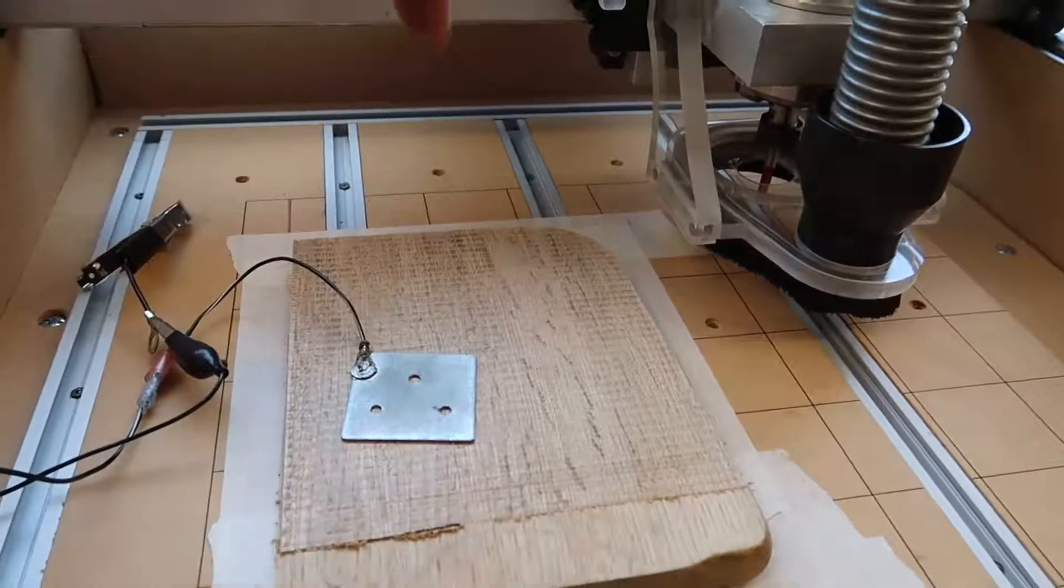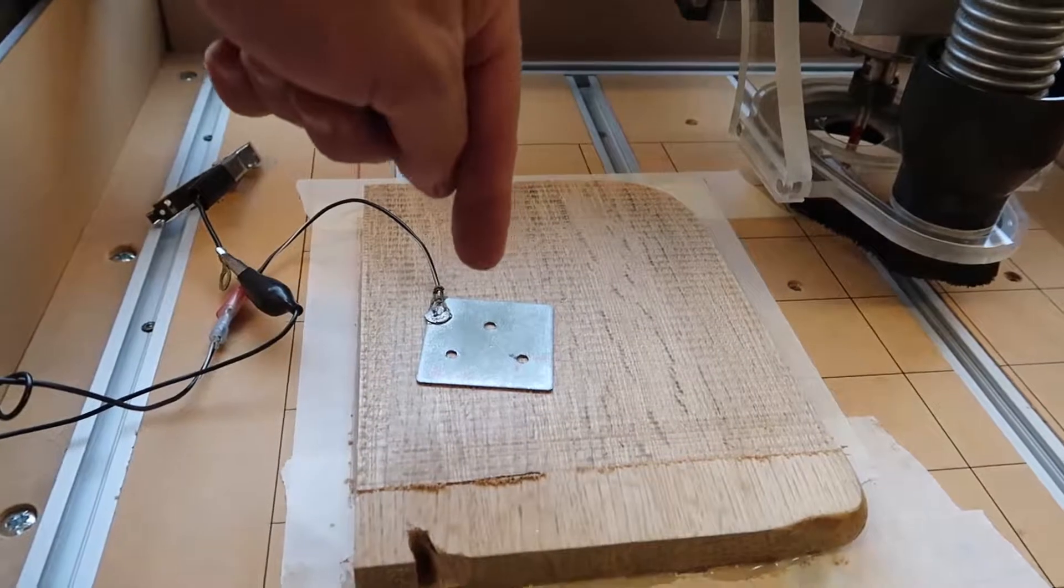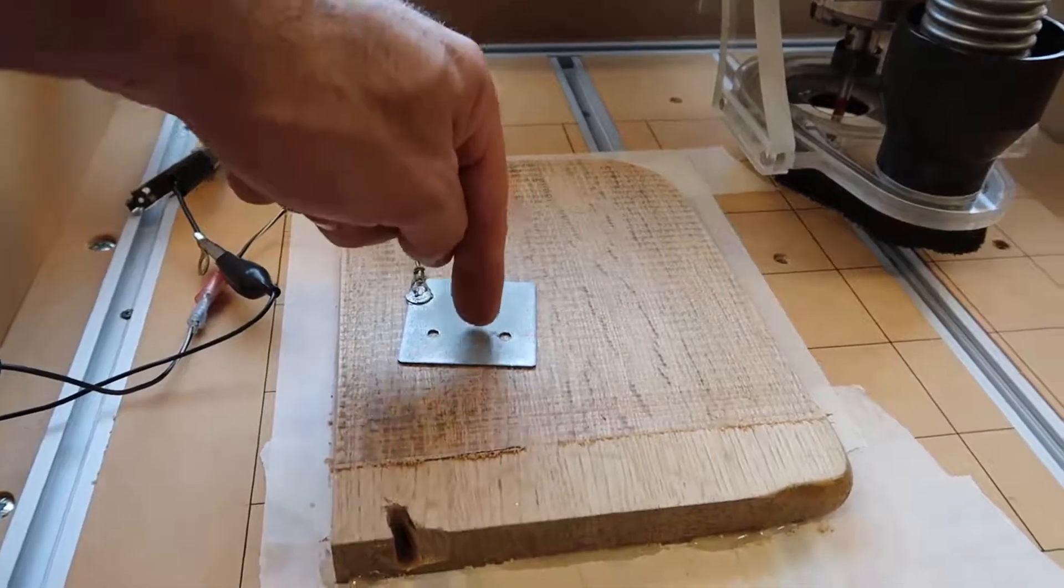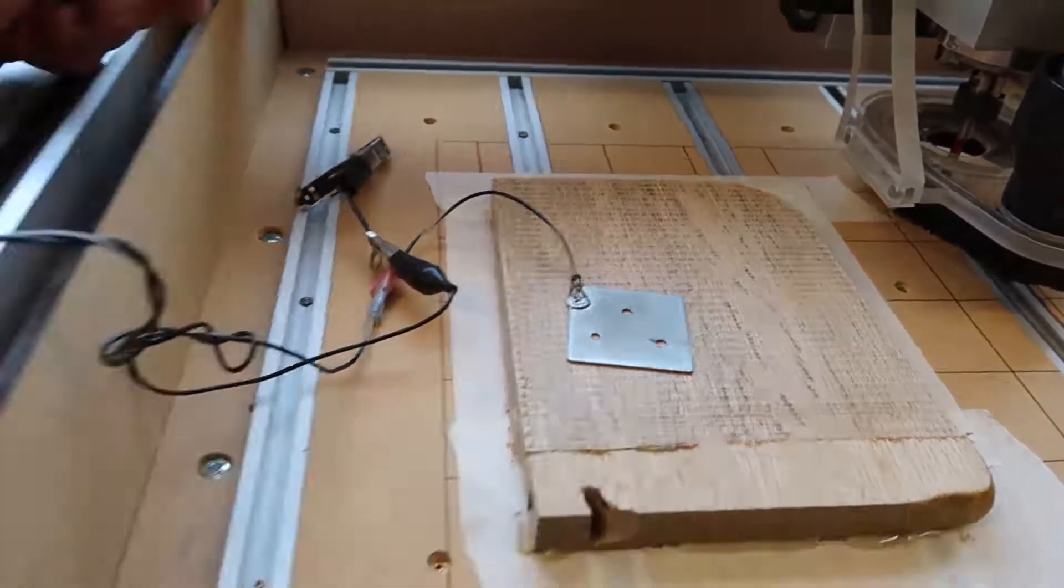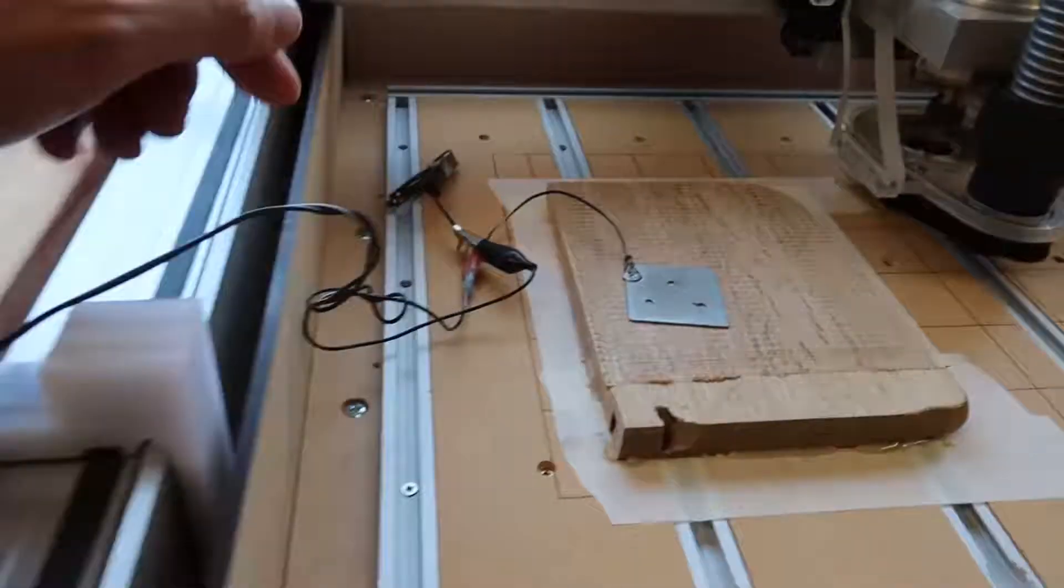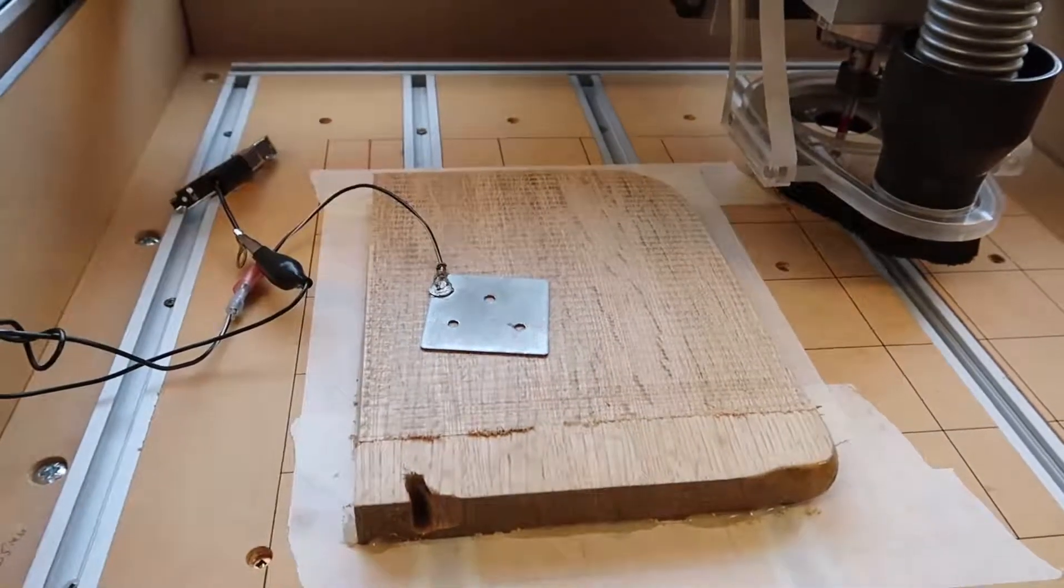My zeroing basically will home the Z, so the router will hit the touch plate and go back up five millimeters. That's a one millimeter plate, so it actually comes up six millimeters off the material, and then it will home to the front left.